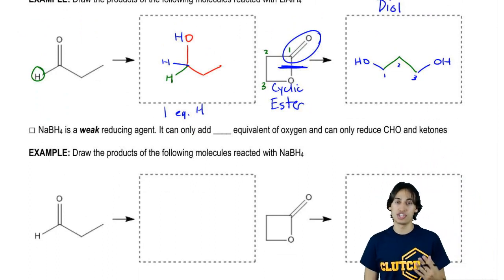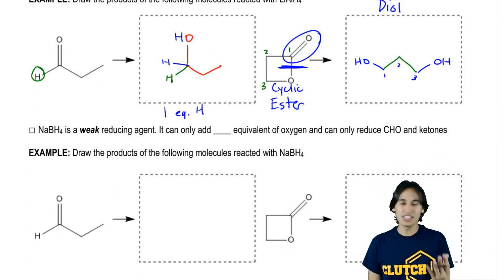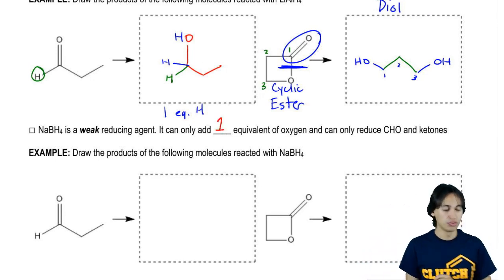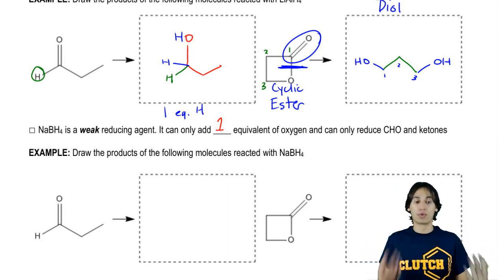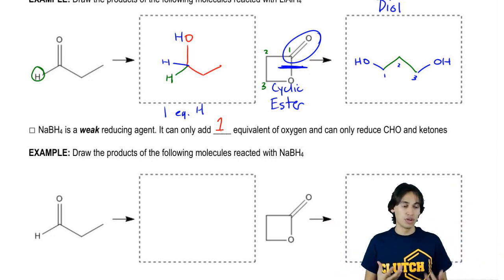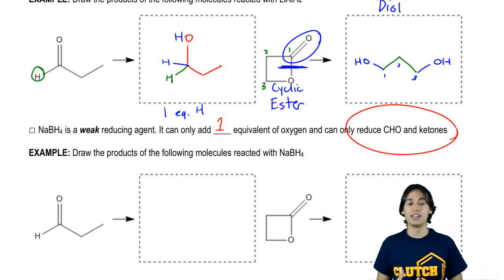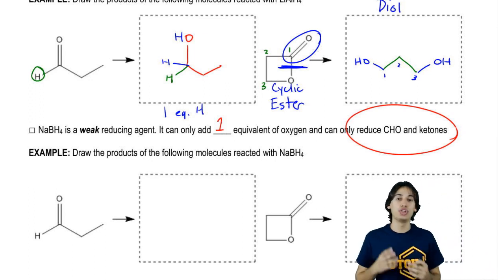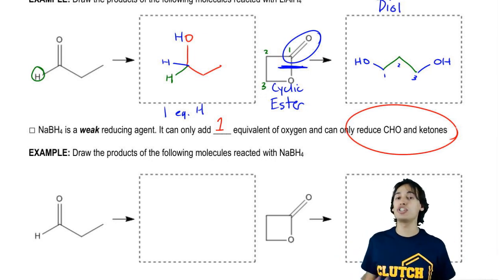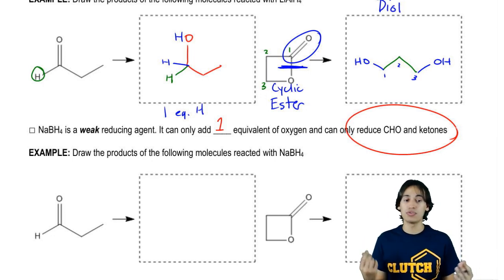We also have something called a weak reducing agent. A weak reducing agent is very similar except it has more limitations. It's only going to be able to add one equivalent of oxygen as opposed to more than one. What I really care that you know is it's only going to be able to reduce aldehydes and ketones. CHO is an aldehyde. When you encounter a carbonyl that is not an aldehyde or ketone, nothing's going to happen because NaBH4 is not strong enough to reduce those reagents.